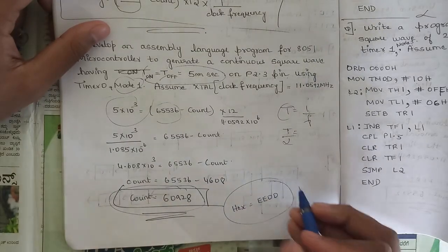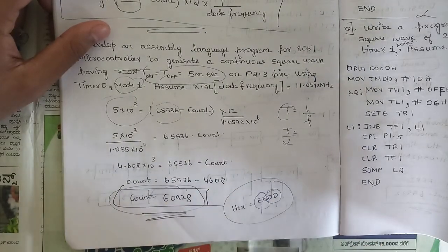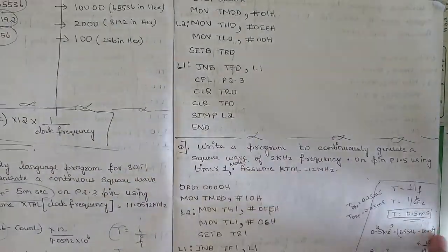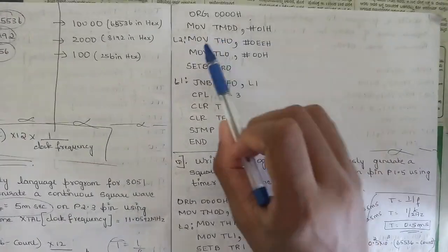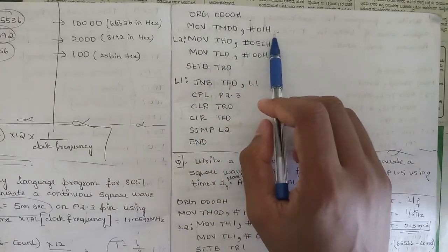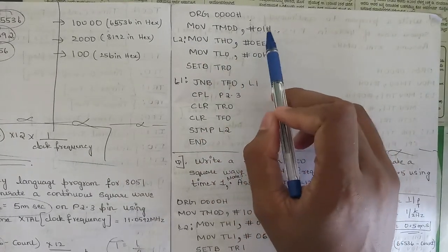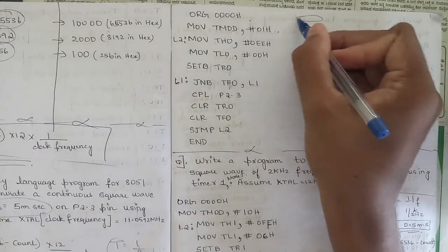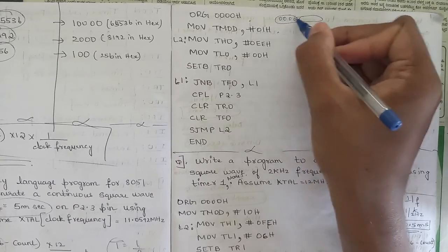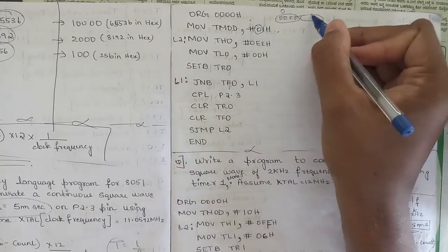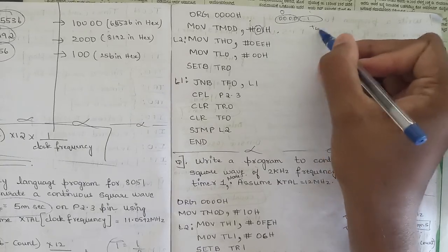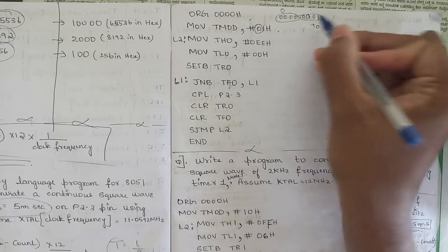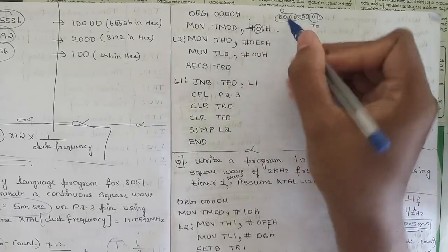Once the count is found, write the code. ORG 00H, then MOV TMOD, #01H — because the question specifies timer 0 mode 1. Timer 1 bits are all zero, and for timer 0 mode 1 the bit pattern is 0001, so TMOD value is 01H.